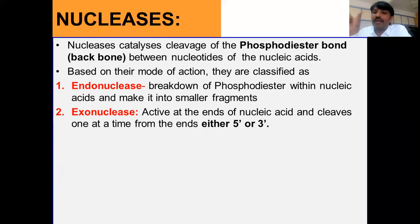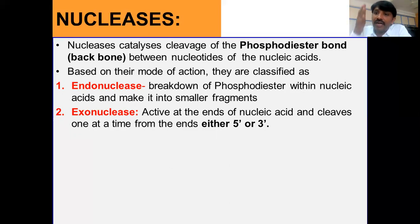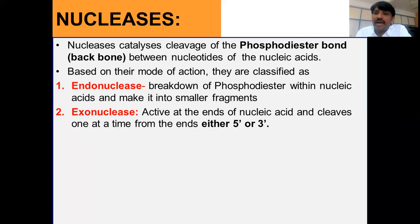Exonucleases act at the terminal ends of nucleic acid. 'Exo' means terminal or ends. They activate at the ends of nucleic acid, either the three-prime or five-prime end, and cleave one nucleotide at a time. One phosphodiester bond is cleaved, then followed by the next, so they degrade the nucleic acid sequentially from the ends.